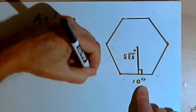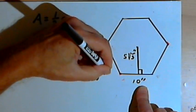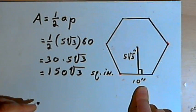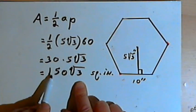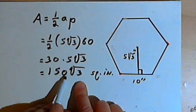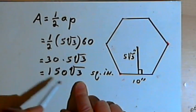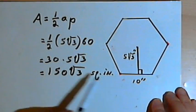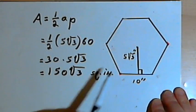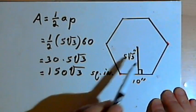I'm dealing with inches, so that's going to be square inches. And of course, if I wanted to, I could put this 150 times the square root of 3 into a calculator, and that would give me a decimal number that would equal the area.